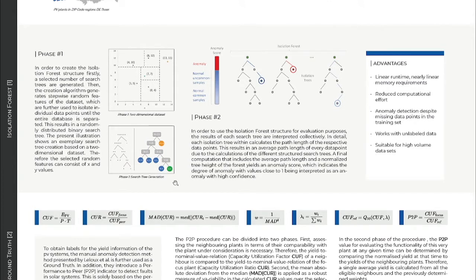The general idea for this approach is that an anomalous data point differs from others in their attributes and can therefore be easily isolated. This can be seen in the two-dimensional example for the yellow data point with x equals 13 and y equals 11. In phase 2, multiple of these random trees are analyzed so that the average depth of a node to the root node determines an anomaly score, which gives information about how likely it is that this data point is normal or not.